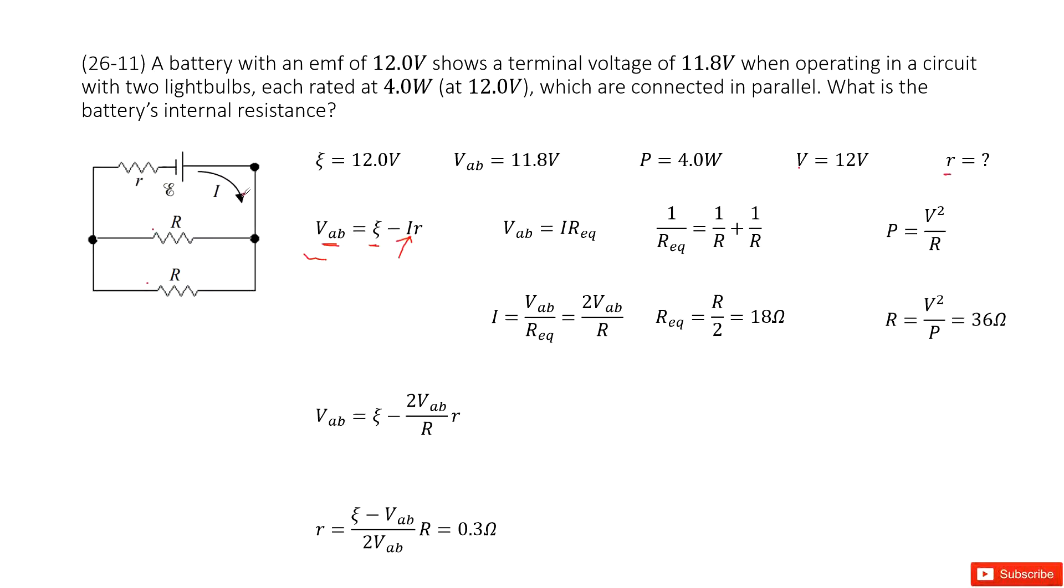In this circuit, we know the terminal voltage V_ab is connected with two light bulbs in parallel. So V_ab equals the current times the equivalent resistance for these two light bulbs. The next step is to find the equivalent resistance. Since this is a parallel connection of two light bulbs, we use the parallel resistance formula.